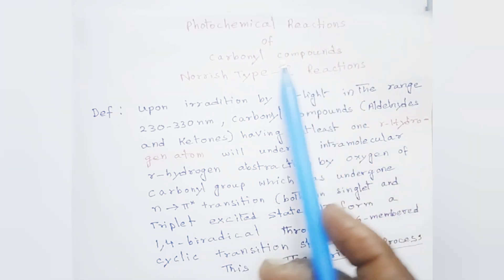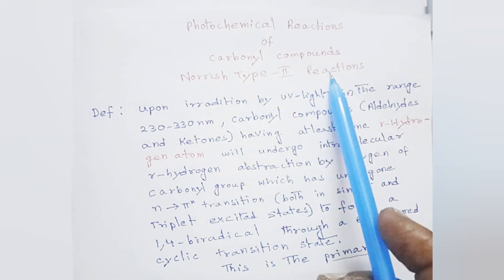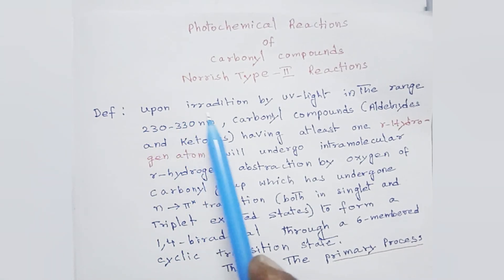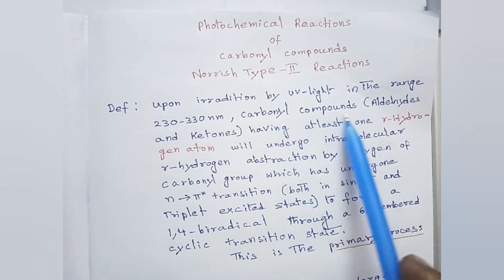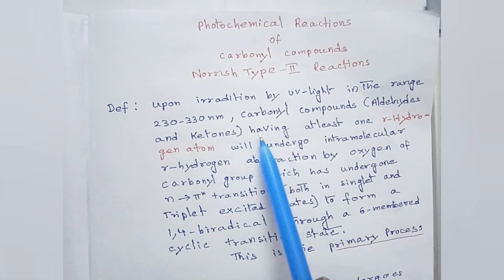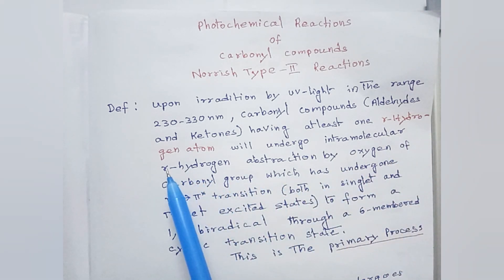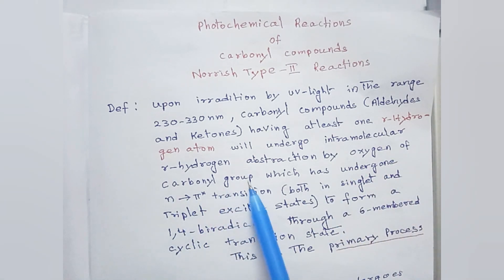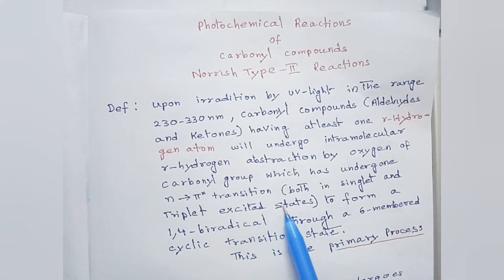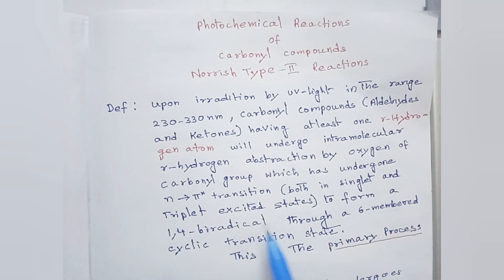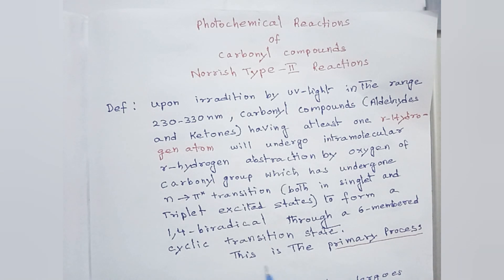Let us consider photochemical reactions of carbonyl compounds, i.e., Norrish Type 2 reactions. Upon irradiation by UV light in the range of 230 to 330 nanometres, carbonyl compounds — aldehydes and ketones having at least one gamma hydrogen atom — will undergo intramolecular gamma hydrogen abstraction by the oxygen of the carbonyl group, which has undergone n to pi-star transition in both singlet and triplet excited states, to form a 1,4-biradical through a six-membered cyclic transition state. This is the primary process.